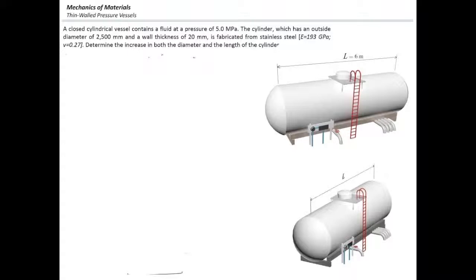It's fabricated from stainless steel with a modulus of elasticity of 193 gigapascals and Poisson's ratio of 0.27. We want to determine the change in the diameter and length of the cylinder after pressurizing the fluid inside.